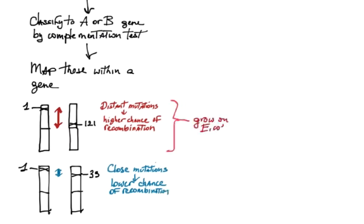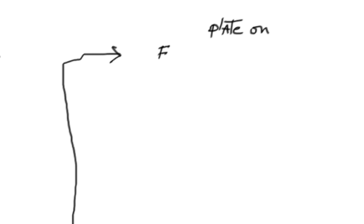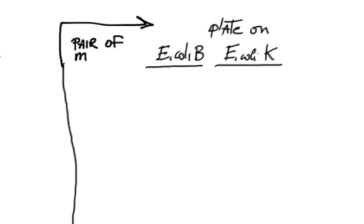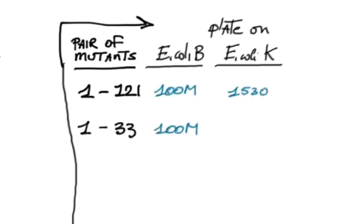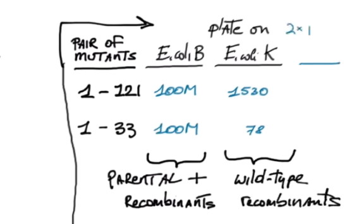The mapping method entailed co-infection of E. coli B, harvest of progeny phages, and then plating these both on E. coli B and on E. coli K. By counting plaques on E. coli B, the total number of infectious phages was obtained. By counting plaques on E. coli K, the number of recombinants that had regained gene function could be counted.